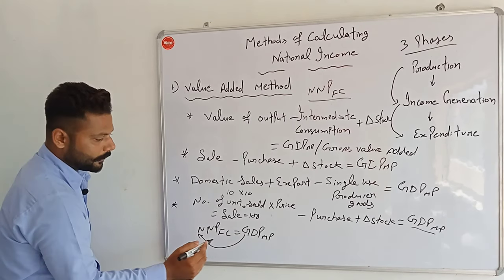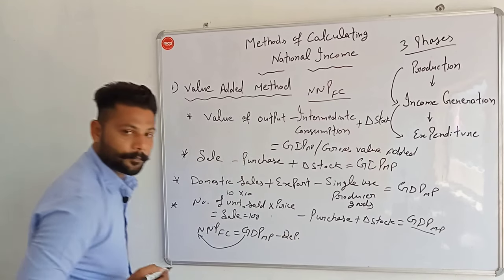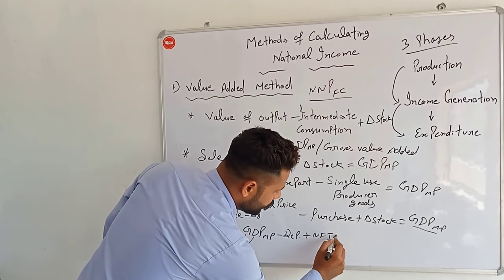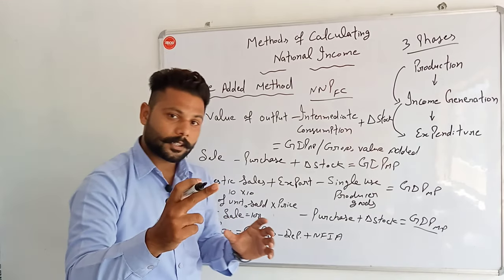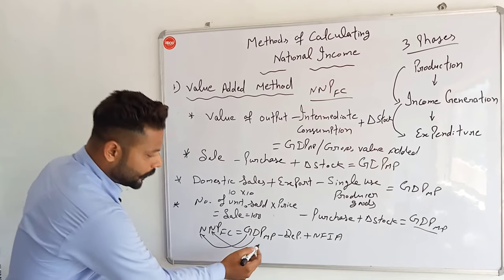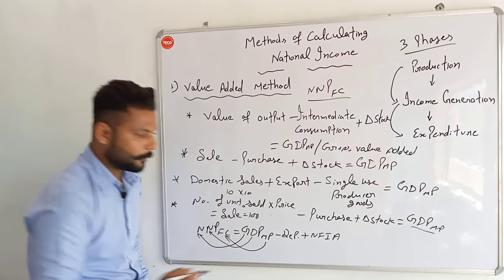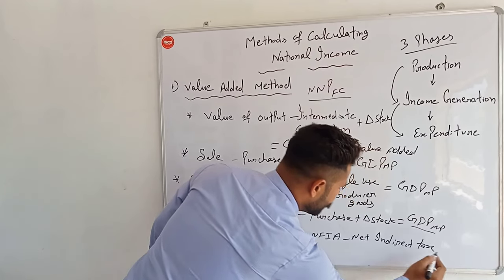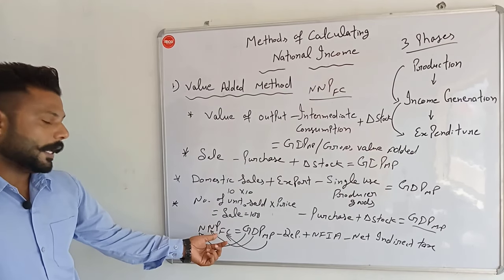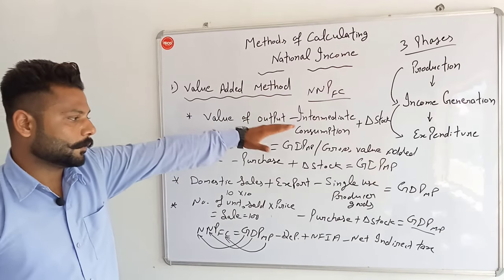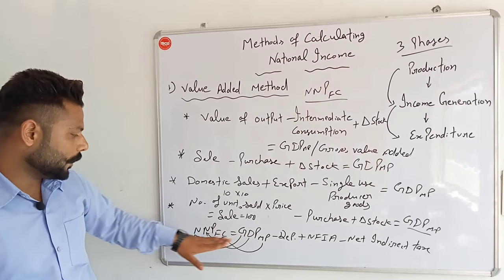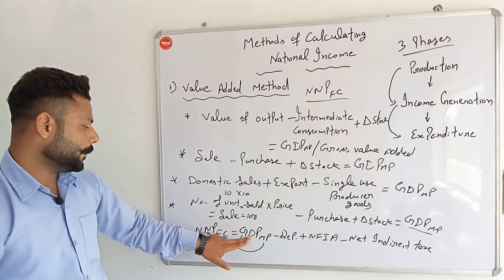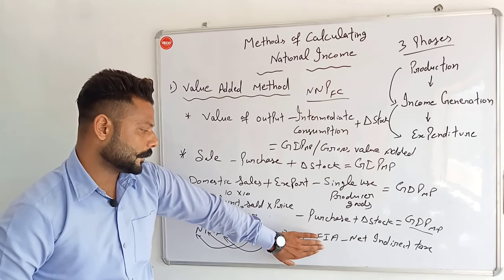We need to know the net factor income and its definition. If we know the net factor income from abroad, we will manage the market price and calculate the net factor tax. We will then calculate the national income, which is NNP at factor cost. We calculate the value-added at market price, then subtract indirect taxes and add net factor income from abroad to arrive at the final national income figure.